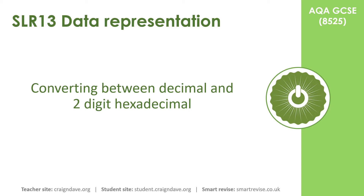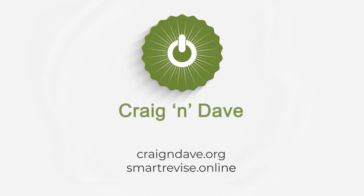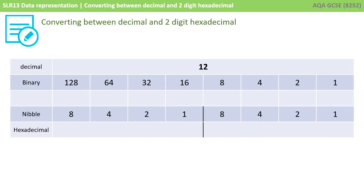In this video we look at how you convert between decimal and two-digit hexadecimal and vice versa. If you haven't already watched our video on base number systems, go back and watch that first. Let's start by converting a decimal number to a two-digit hex number. The best way to tackle this so you don't make mistakes is to take the conversion through a binary number first.